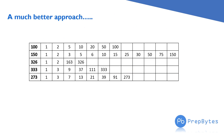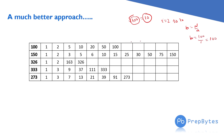Let's verify with examples. For n = 100, √100 = 10. Loop from i = 2 to 10 to find factors. For a = 1, b = 100/1 = 100. For a = 2, b = 50. For a = 5, b = 20. For a = 10, b = 10. We find all factor pairs just by checking up to 10.